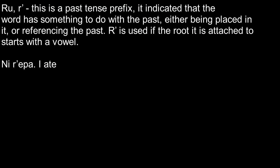Roo or ruh is a past tense prefix and indicates that a word has something to do with the past, either being placed in it or referencing it. If it's attached to a noun, then it means that noun has something to do with the past. If it's a verb, then it means that action was done in the past. You use r-apostrophe if the prefix is attached to a root that starts with a vowel. For example, ni-r'epa means 'I ate.' Epa means eat, so adding r-apostrophe gives you r'epa — ate in past tense.